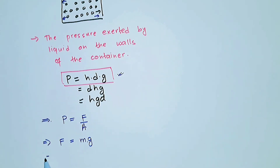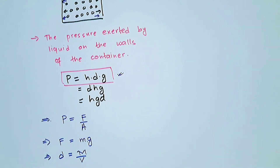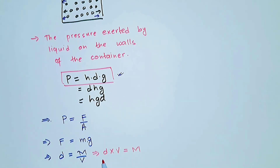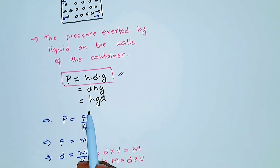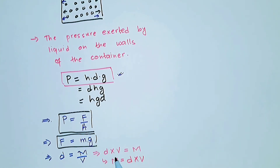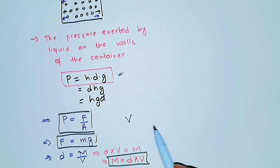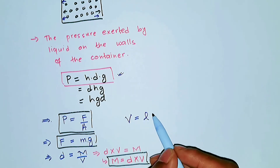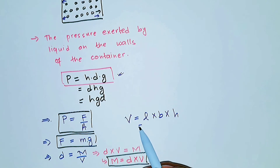The last formula you need to know is of density. The formula of density is mass per unit volume. From this we can derive the formula of mass: density times volume equals mass. So mass is density times volume. There is also one more formula — the formula of volume. Volume is length times breadth times height, but it can also be written as area times height, since L times B is area.